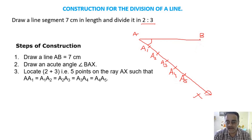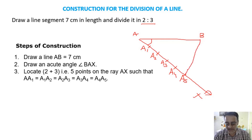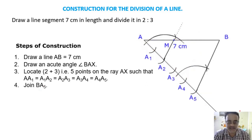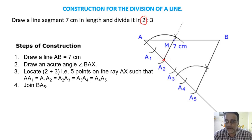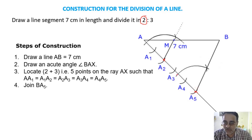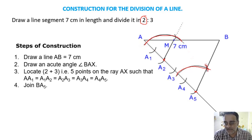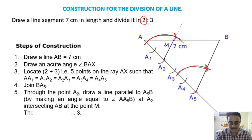After that we will join B to A5. In order to draw the parallel line, what we have to do - with center A5 we have to draw one arc. We have to draw one arc up. So construction.